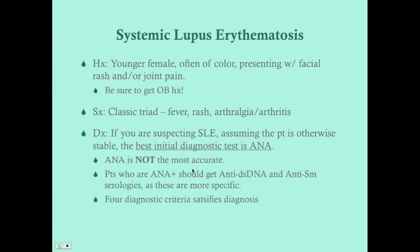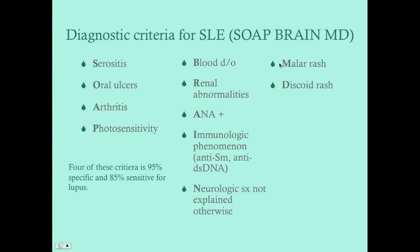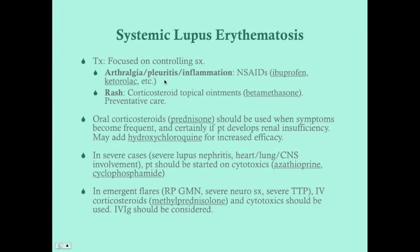ANA is a screening test and is not the most accurate test for lupus. Many people can come back ANA positive without having lupus, but very few people with lupus lack a positive ANA — so it's very sensitive but not specific. Any patient that comes back ANA positive should then get anti-dsDNA and anti-Smith antibody serology. These are more specific, and if positive, that's another criterion. Four diagnostic criteria satisfies the diagnosis. SOAP BRAIN MD is how you remember all 11 criteria.